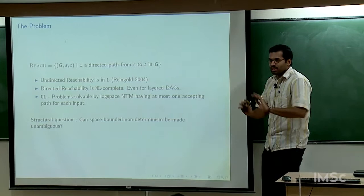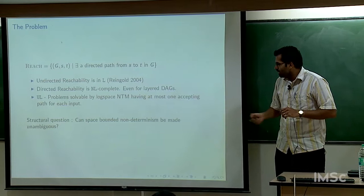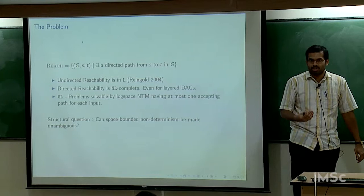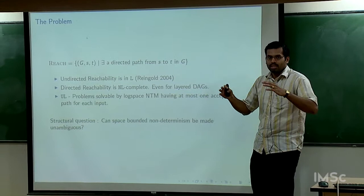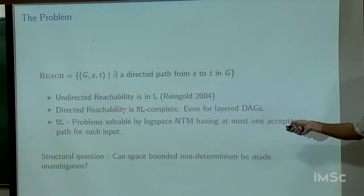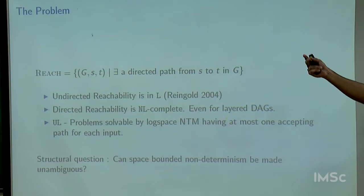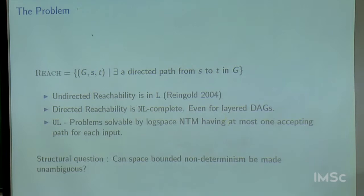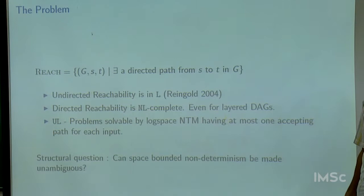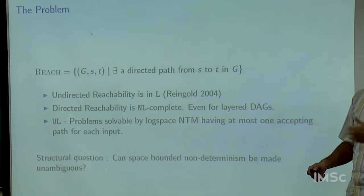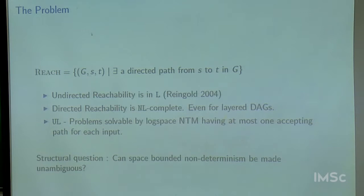The structural question one would want to ask first, before tackling NL versus L, is: can one convert a space-bounded non-deterministic Turing machine into an unambiguous one — meaning if it accepts, it has exactly one accepting path? A trivial algorithm for directed reachability guesses the next vertex from S, but the number of accepting paths equals the number of paths from S to T, which can be exponential. So one wants something better.